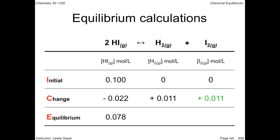We use the molar ratios from the balanced equation to stoichiometrically determine the changes in concentration of the products. Only 1 mole of hydrogen is produced per 2 moles of hydrogen iodide. So the concentration of hydrogen changes by 0.011 moles per liter, and since there was no hydrogen to start with, the change is an increase, hence the plus sign. Iodine has the same stoichiometric coefficient as hydrogen, so its concentration increases by the same amount. By adding the initial concentrations and the changes in concentrations, we end up with the equilibrium concentrations of all the compounds in the reaction.